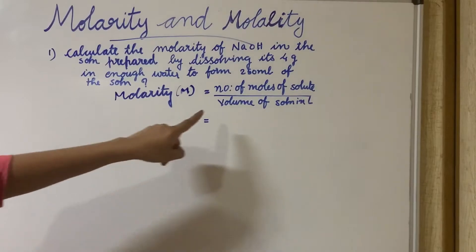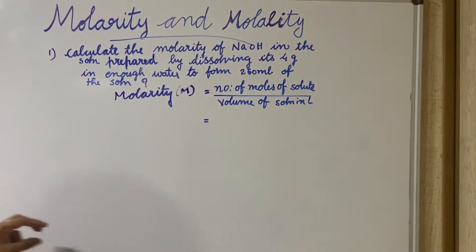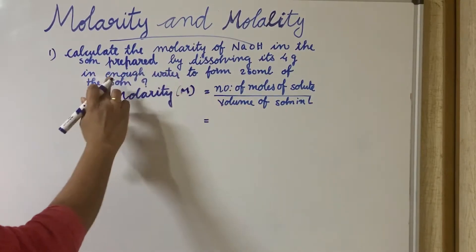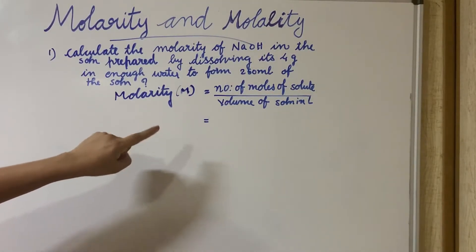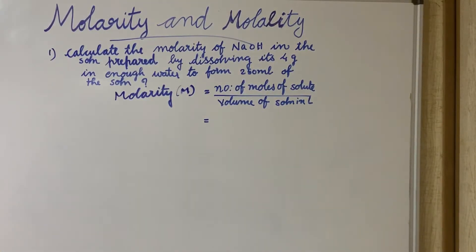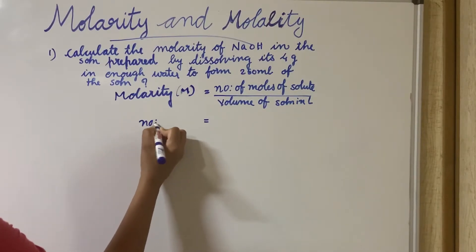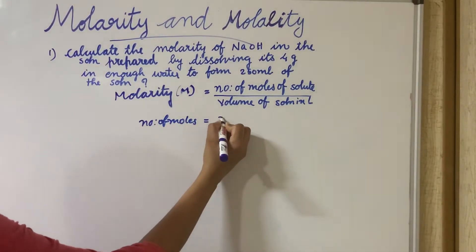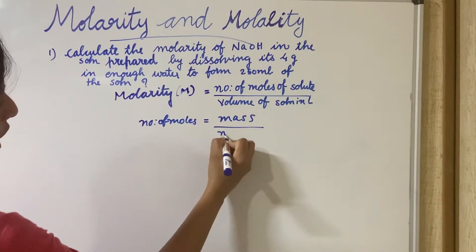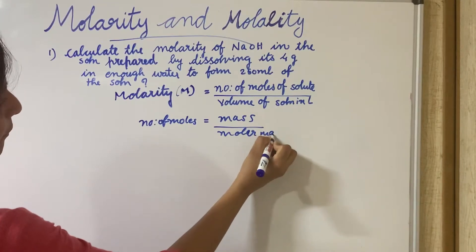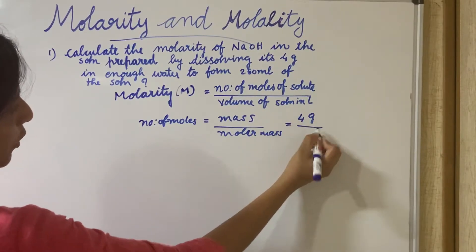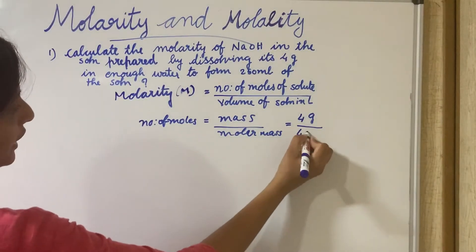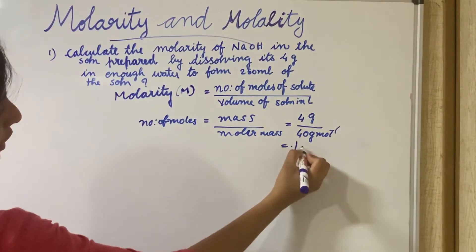Molarity is the number of moles of solute divided by volume of solution. We have 4 grams of NaOH. We calculate the number of moles: number of moles equals mass divided by molar mass. Our mass is 4 grams and the molar mass of NaOH is 40 grams per mole, giving us 0.1 mole.